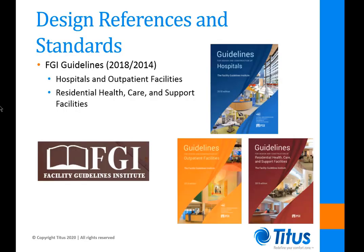The overarching standard for healthcare facility design is the FGI guidelines. This has been adopted as code in 42 of the 50 states. The other states that have not adopted the FGI guidelines either accept them as equivalent to their state codes, use language from the guidelines in their state codes, or incorporate them by reference. It is important to note that the FGI guidelines are under continuous maintenance. The most recent edition is the 2018 edition. A major change that began with the 2014 edition split residential care spaces from hospitals and outpatient facilities, giving each separate volumes dedicated to their unique requirements.